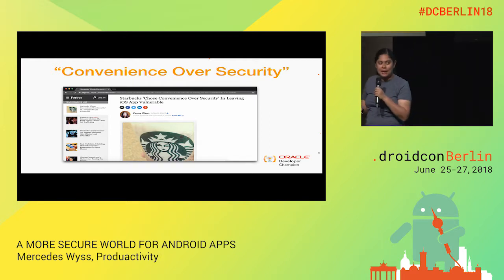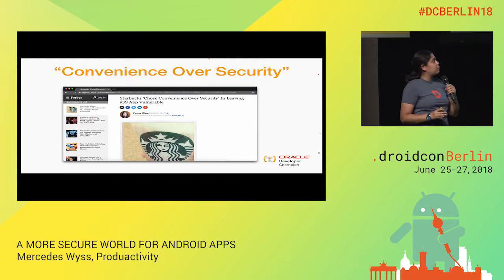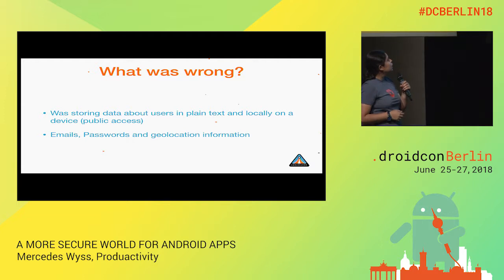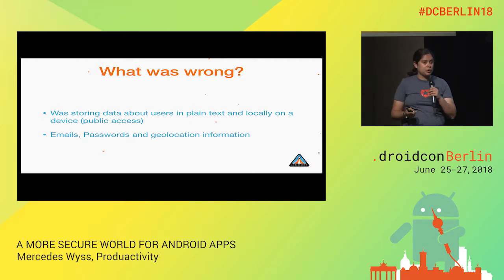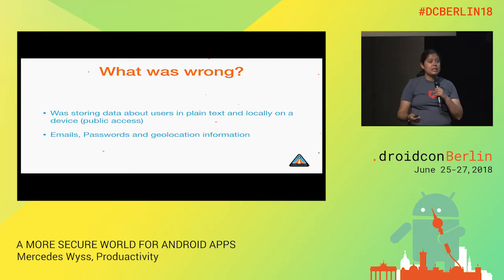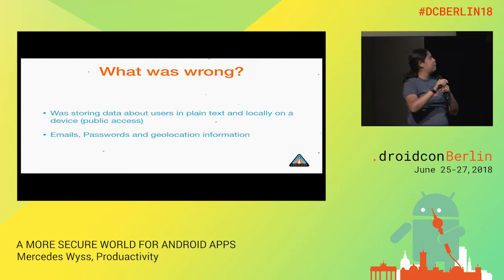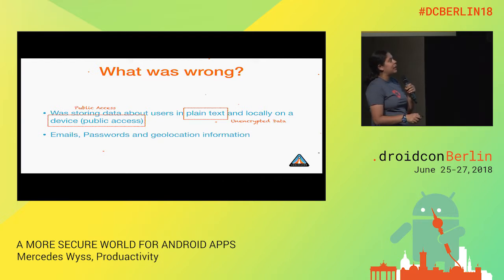Here's another case from 2014 — Starbucks in the United States. What was Starbucks doing wrong in their application? They were storing user data in a plaintext file with public access. If you had access to the phone, you could read all the information. They stored emails and passwords there. The reason was to avoid requiring users to log in every time they bought something — the app just read credentials from the file. But that is completely wrong.